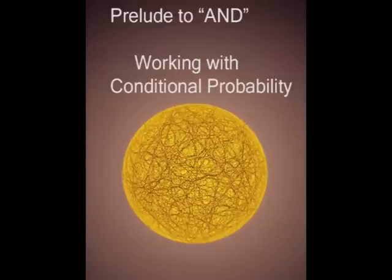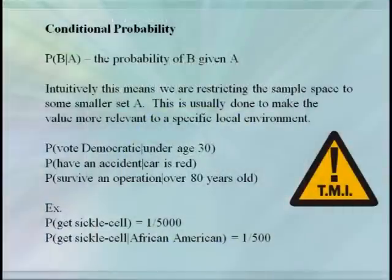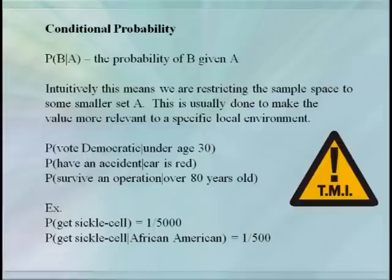Finally, we want to talk about the AND operation, which corresponds to intersection. But before we do that, we need to introduce the idea of conditional probability. We use conditional probability when the sample space for our event contains too much information — it's so large that useful information is lost. So we consider the same event with a more limited sample space. We denote this B given A, where the probability of B given A means the probability of B limited to the smaller sample space A.